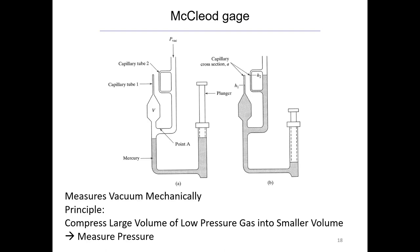We're going to study three devices. The first one is the McLeod gauge, shown here in two states: state A and state B. It measures vacuum mechanically. The principle is it compresses a large volume of low-pressure gas into a smaller volume, and through that compression you measure the pressure. We'll walk through how the device works on the next slide.